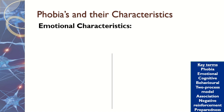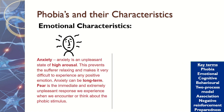There are different types of characteristics — emotional, behavioural, and cognitive. Emotional characteristics refer to our feelings, and for phobias there are two types. The first is anxiety: one of the main feelings when we have a phobia is anxiety. We're in a state of high arousal, terrified of a particular thing or situation. This can be a long-term fear, so we're constantly on edge — for example, worried about a spider being present in the room.